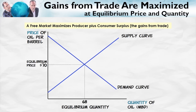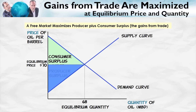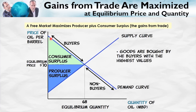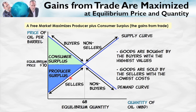So a free market maximizes the gains from trade. Remember also that the gains from trade can be broken down into two parts: the consumer surplus and the producer surplus. Notice that the equilibrium price splits the demand curve into two parts — the goods are bought by the buyers who value them the most, the buyers with the highest demands. These are the buyers and these are the non-buyers. And goods are sold by the sellers with the lowest costs; those with higher costs are the non-sellers.